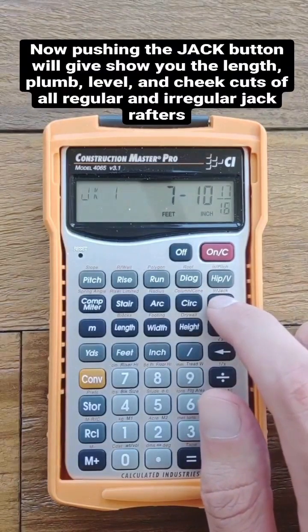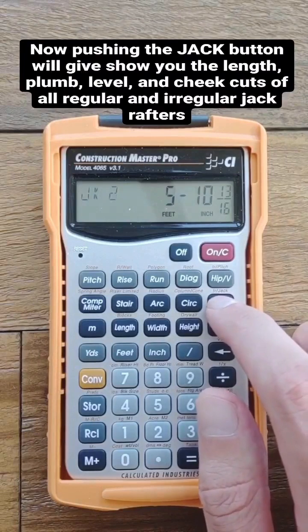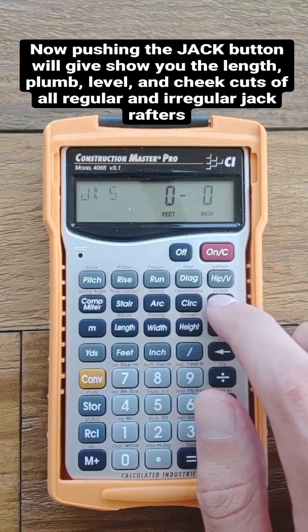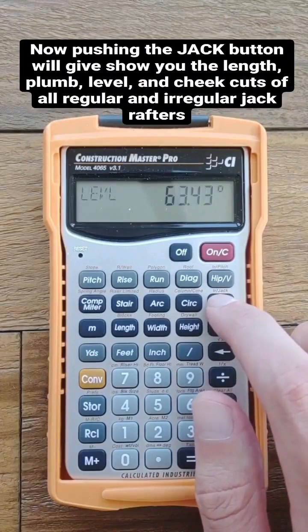After, you can keep pushing the jack button. This will toggle through all the cuts you need on both your regular and irregular jack rafters.